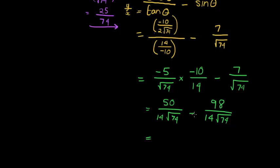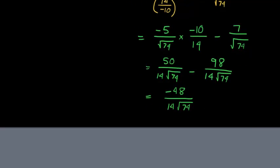When I simplify, 50 minus 98 is negative 48, divided by 14 square root of 74. We can simplify a little bit more. 2 can go into there and into there 24 times. So we get negative 24 over 7 square root of 74.